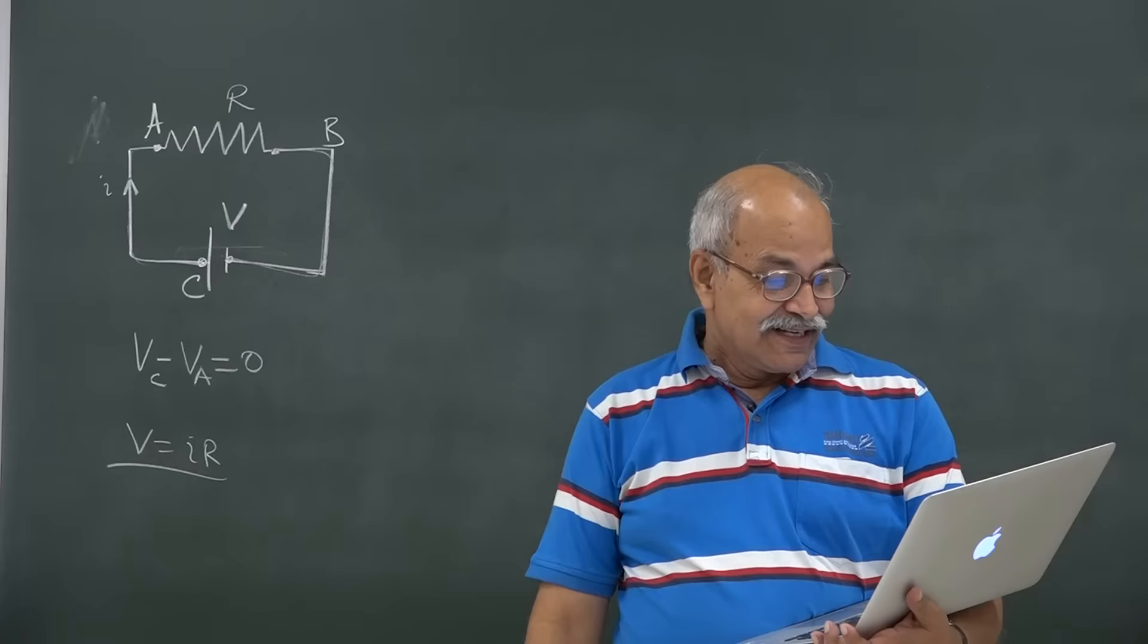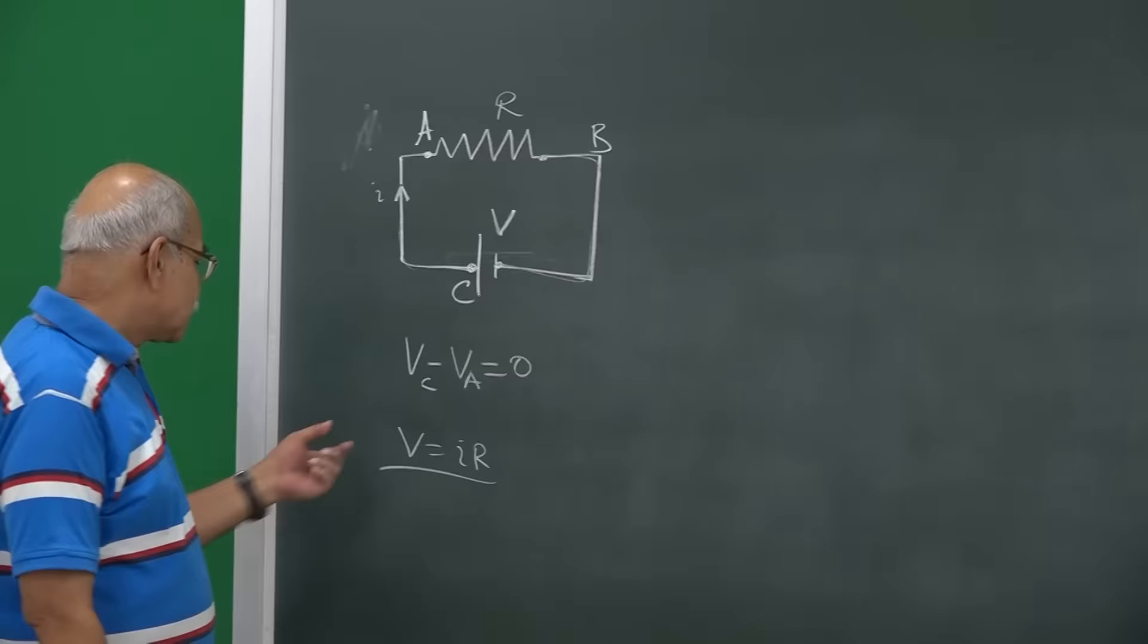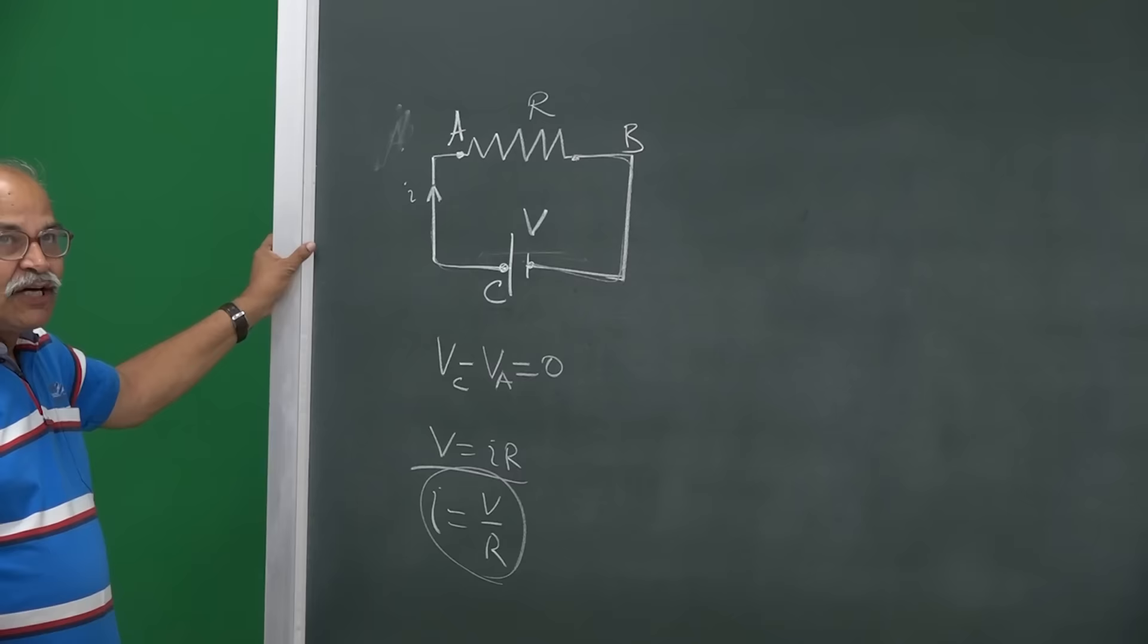In Ohm's law, we have studied that if you have a potential difference, then the current will be there and that current will be given by I equals V by R. Now, if I look at this circuit,